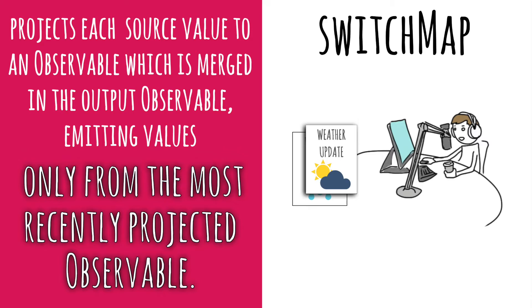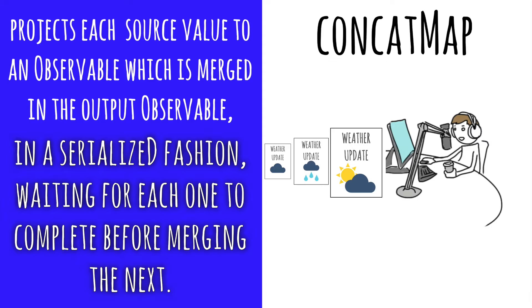The radio announcer is the most basic, just reading the report — but which operator he represents depends on his behavior. If a new report comes in while he's reading and he stops the first report to begin the new one immediately, that's a switchMap, because switchMap projects each source value to an observable which is merged in the output observable, emitting values only from the most recently projected observable. If he doesn't begin a new report until the first one is finished, that's concatMap — which projects each source value to an observable merged in the output observable in a serialized fashion, waiting for each one to complete before merging the next.